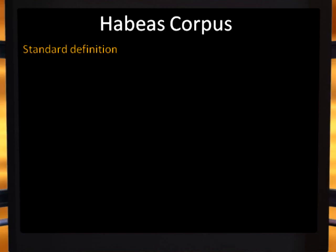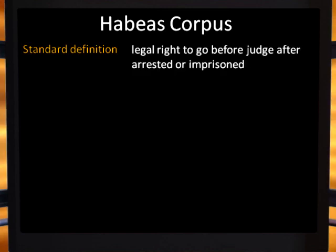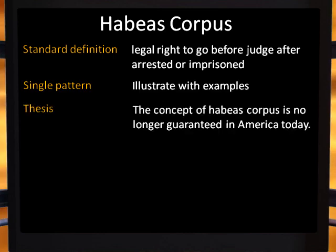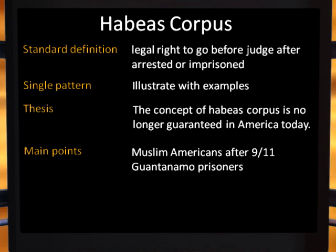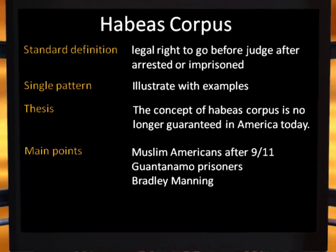Here's another example of a single pattern at work. Term: habeas corpus. Standard definition: legal right to go before a judge after being arrested or imprisoned. Pattern: illustrate with examples. Thesis: the concept of habeas corpus has been diluted in America today. Our support consists of illustrative examples — example one: Muslim Americans who were arrested and disappeared after 9/11; example two: Guantanamo Bay prisoners who have been held for nearly 11 years without being charged; and example three: Bradley Manning, who was in solitary confinement for almost a year without seeing a judge or being charged with a crime.